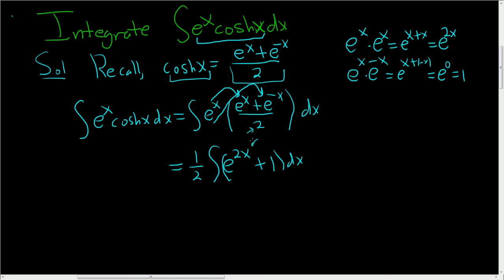Now to integrate e to the 2x, you can make a substitution. The substitution would be u equals 2x, etc. You should do it if you don't know how. But in general, when you have e to the ax dx, it's just e to the ax divided by a plus c. This is true as long as a is not 0. So in this case,